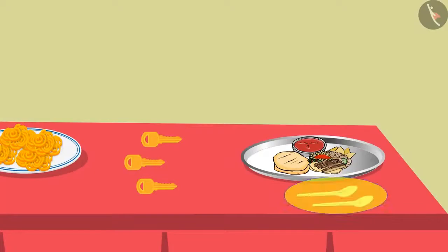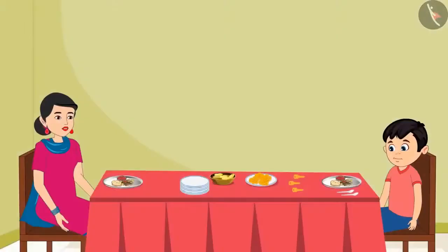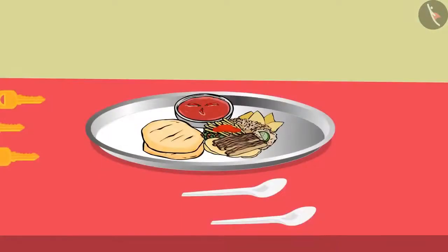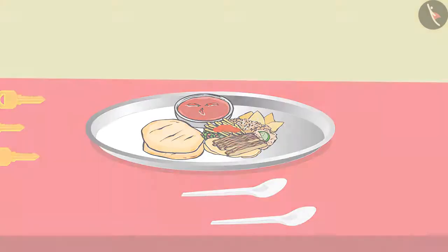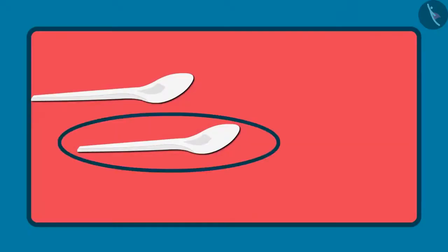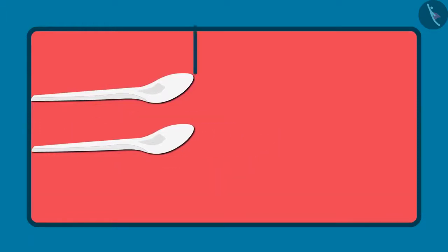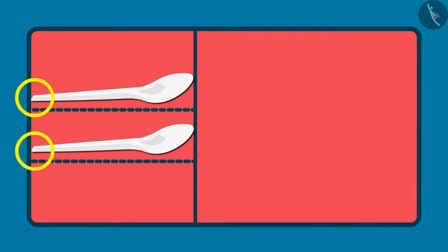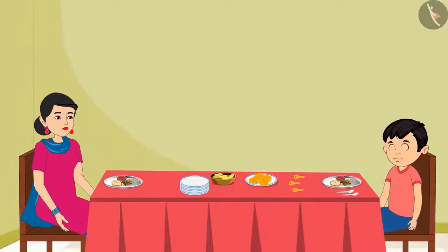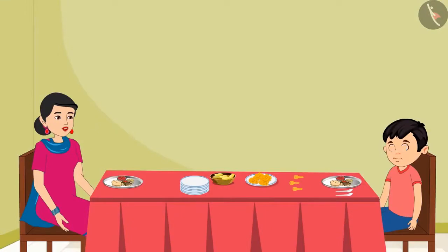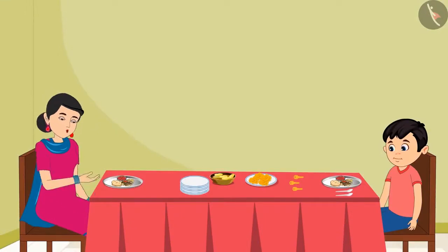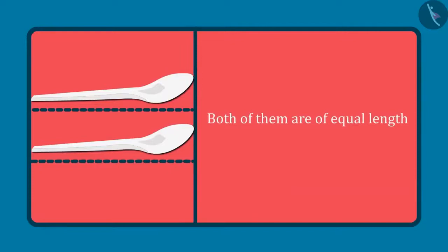Mummy says, 'Chotu, both these spoons are of the same length — neither of them is short or long.' Chotu insists, 'No mummy, see — this spoon is long and this spoon is short.' Mummy explains, 'This spoon looks longer to you because it is placed a little ahead. Keep both spoons together so that one end is aligned.' Chotu does so and realizes, 'Oh yes mummy, both of them are of the same length.'